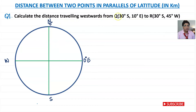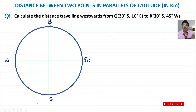Point Q is 30 degrees south, 10 degrees east, to point R which is 30 degrees south and 45 degrees west. Let's put that on a diagram first — you must always do this. So this is a latitude, meaning whatever it is is traveling on the same small circle. 30 degrees south — south is this way — so we have our equator there and the prime meridian here.